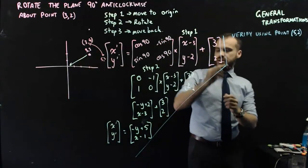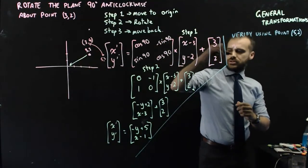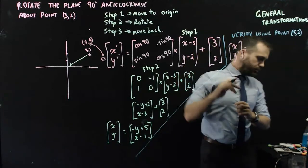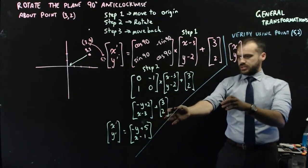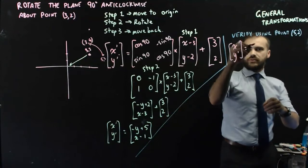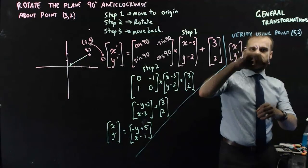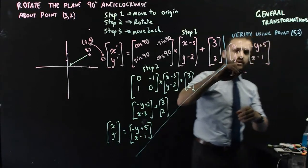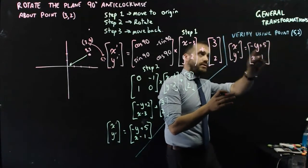All right. So let's see if that does work. So image is equal to—and now we're going to use this—negative y plus 5, x minus 1. And then sub in the point that I'm dealing with.